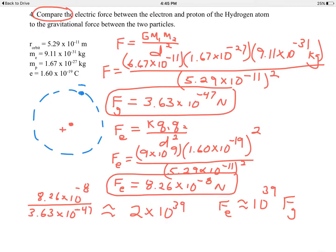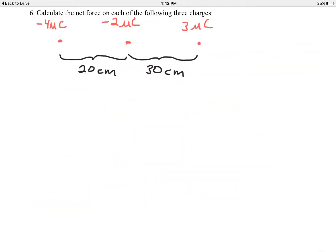Here's a good problem — an application of Coulomb's law, really highlighting the vector nature of these forces. We have three collinear charges lying along a line, separated by 20 centimeters between the negative 4 microcoulomb and the negative 2 microcoulomb charges, and 30 centimeters between the negative 2 and the positive 3 microcoulomb charges. We'll use Coulomb's law to calculate each pair of forces: F sub E equals K times Q1 times Q2 divided by the distance squared.